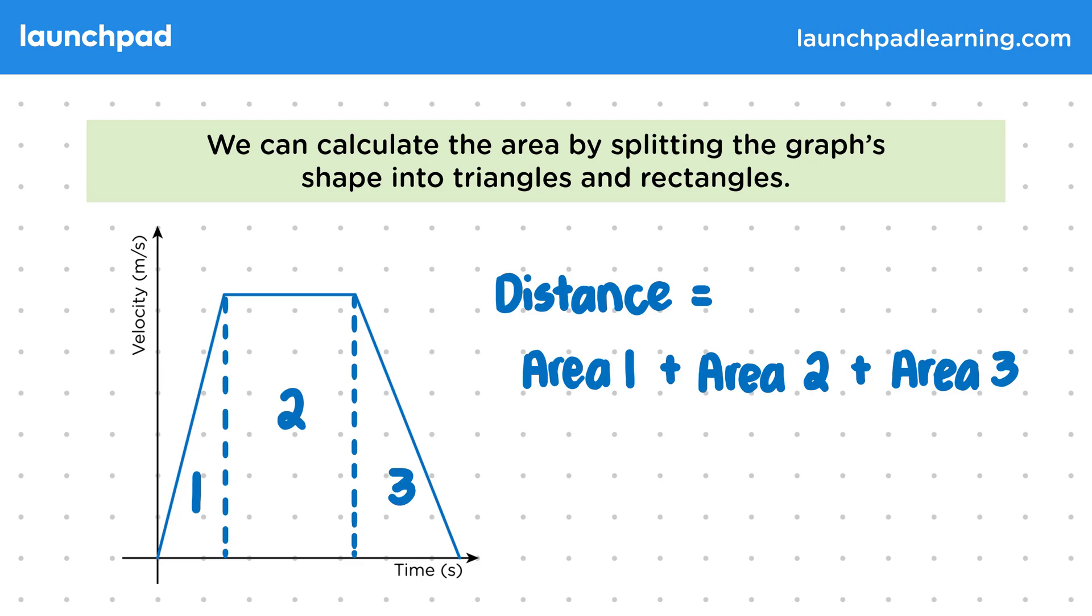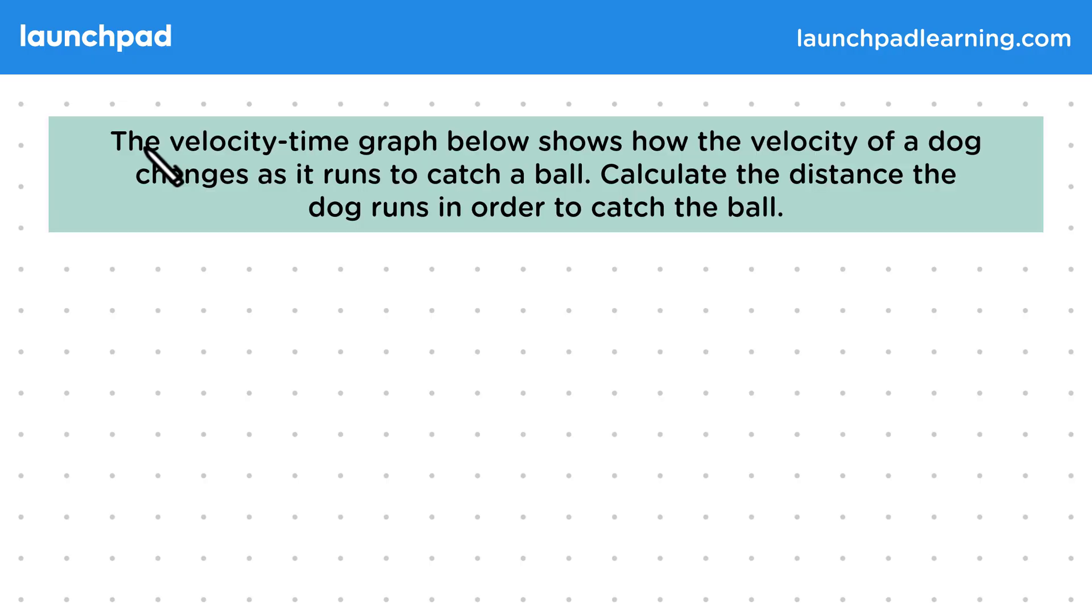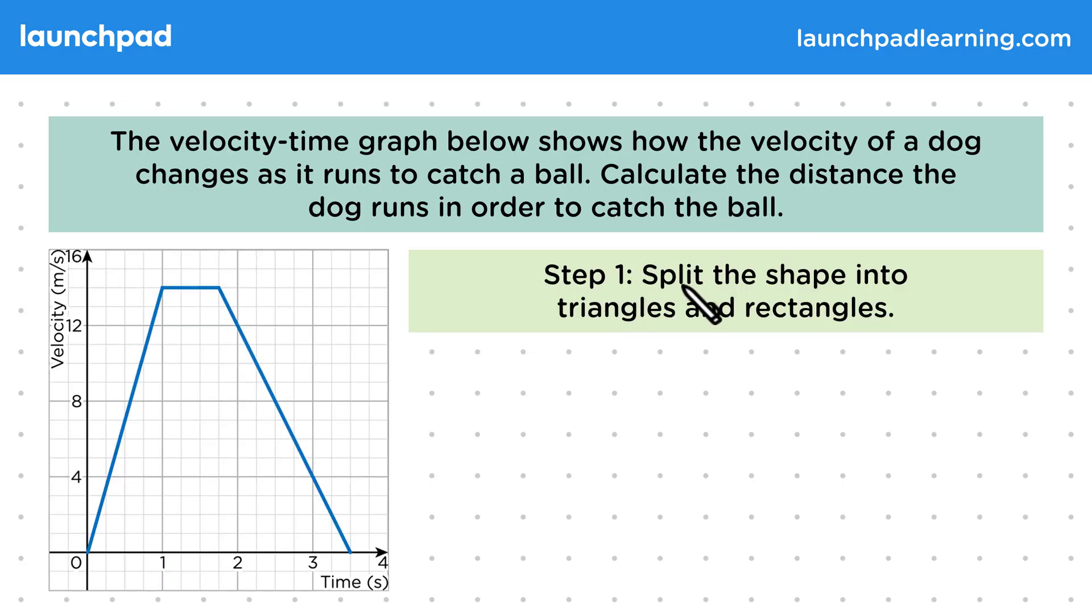Let's do a full example to practice this. The velocity-time graph below shows how the velocity of a dog changes as it runs to catch a ball. Calculate the distance the dog runs in order to catch the ball. So for step 1, split the shape into triangles and rectangles. Again, this is the expected method for a physics exam, but you won't be penalised if you use a formula for a trapezium instead. Let's split the graph up like this, so we have a rectangle in the middle and a triangle either side.